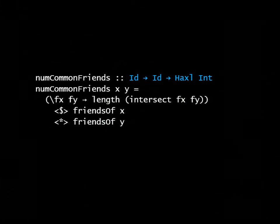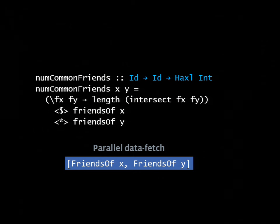I've glued together my computations here using the applicative operations, in particular the applicative star operation. Haxl's implementation of that operation gives you some parallelism. When I execute this function, I get a parallel data fetch. The friends of function is making a data fetch to some remote database. Because I have two friends of requests, they execute in parallel at the same time.